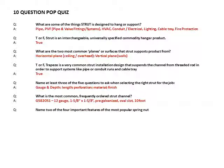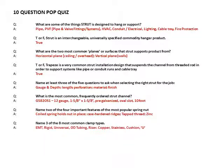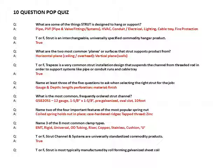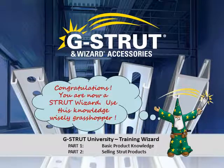Name two of the four important features of the most popular spring nut: coiled spring holds nut in place, case-hardened ridges, tapped thread, zinc plating. Name three of the eight most common clamp types: EMT, rigid, universal, OD tubing, riser, copper, stainless, cushion, U. True or false: strut channel and systems are universally standardized commodity products. True. True or false: strut is most typically manufactured by roll forming galvanized sheet coil. True. Congratulations — you are now a strut wizard. Use this knowledge wisely, grasshopper.